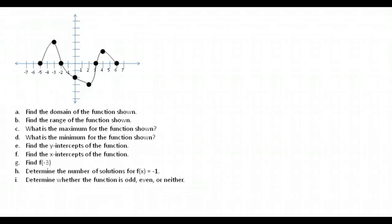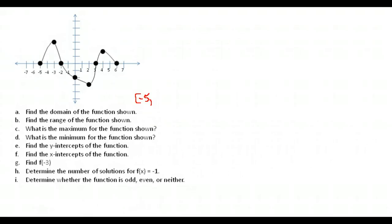Find the domain. Domain is the x values, so what's the furthest we get to the left and what's the furthest we get to the right? To the left we start at negative five and to the right we end at six. We have points where it stops, so writing this in interval notation, our x values range from negative five to positive six.